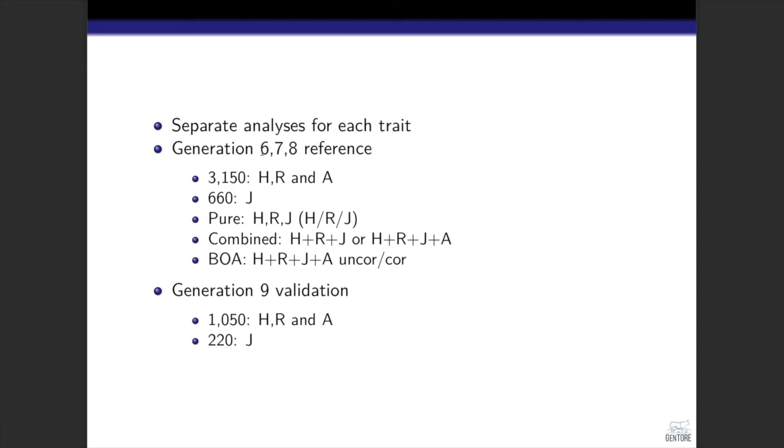We used a full rotation cycle, generations 6, 7, and 8 in the reference population, and generation 9 as validation population. When forming the reference populations, this means that we had 3,150 from Holstein, Red, and mixed populations, and 660 from the Jersey population.